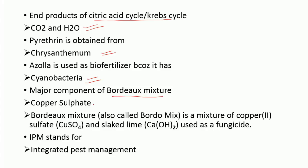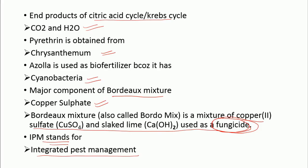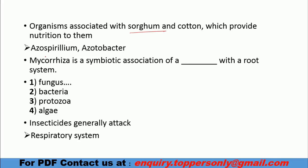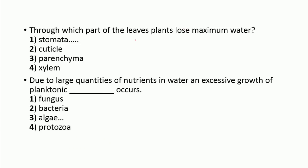Pyrethrin is obtained from chrysanthemum. Azolla is used as biofertilizer because it has cyanobacteria that help with nitrogen fixation. The major component of Bordeaux mixture is copper sulfate — it is a mixture of copper sulfate and slaked lime used as a fungicide. IPM stands for Integrated Pest Management. Organisms associated with sorghum is Azospirillum, and with cotton is Azotobacter, which helps in nitrogen fixation. Mycorrhizae is a symbiotic association of fungus with roots. Insecticides generally attack the respiratory system.